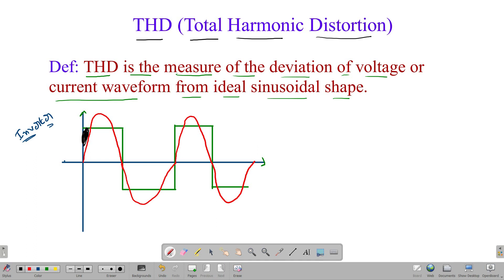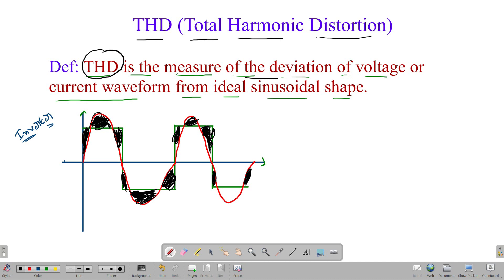The remaining part — the unwanted part from the sine wave — is the deviation from the exact sine wave. If you eliminate this, then you can get a pure sine wave. So this is exactly what THD means. The definition is clear: Total Harmonic Distortion is the measure of deviation of a voltage or current waveform from its ideal sinusoidal shape.